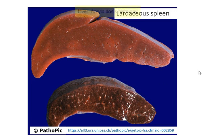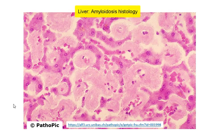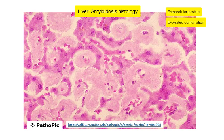On microscopy, amyloid is actually an abnormal protein that is by definition extracellular in location. It has a specific beta-pleated conformation. It resists destruction and digestion by the cells in the body. So once it accumulates in the tissues, it is there to stay. Here is an example of the microscopic picture of a liver with amyloidosis.